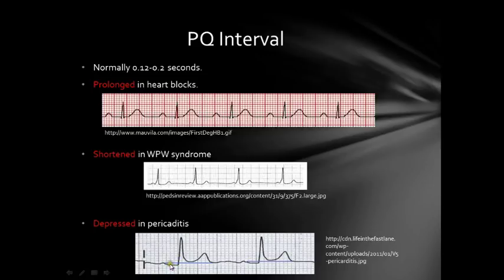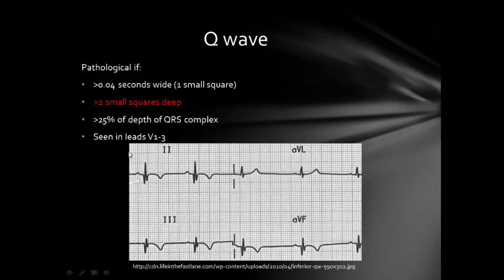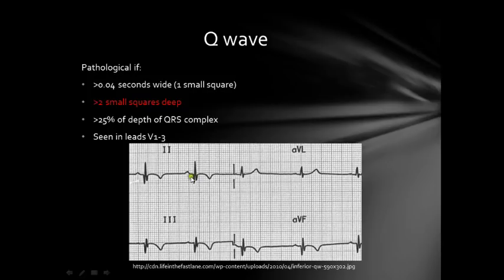The third thing is the Q wave. If the Q wave is more than two small squares deep, it is abnormal — like in this example where you have almost five small squares deep. An abnormal Q wave is most commonly an indicator of an old MI. For example, you can see deep Q waves in leads 2, 3, and AVF — those are the inferior leads — meaning an old MI in the inferior territory. You may also have T wave inversion to suggest an old MI.